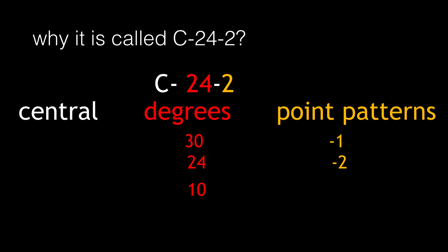Let's discuss visual field point patterns and degrees. Why is it called C-24-2? C stands for central, 24 stands for degrees which could be 30, 24, or 10.